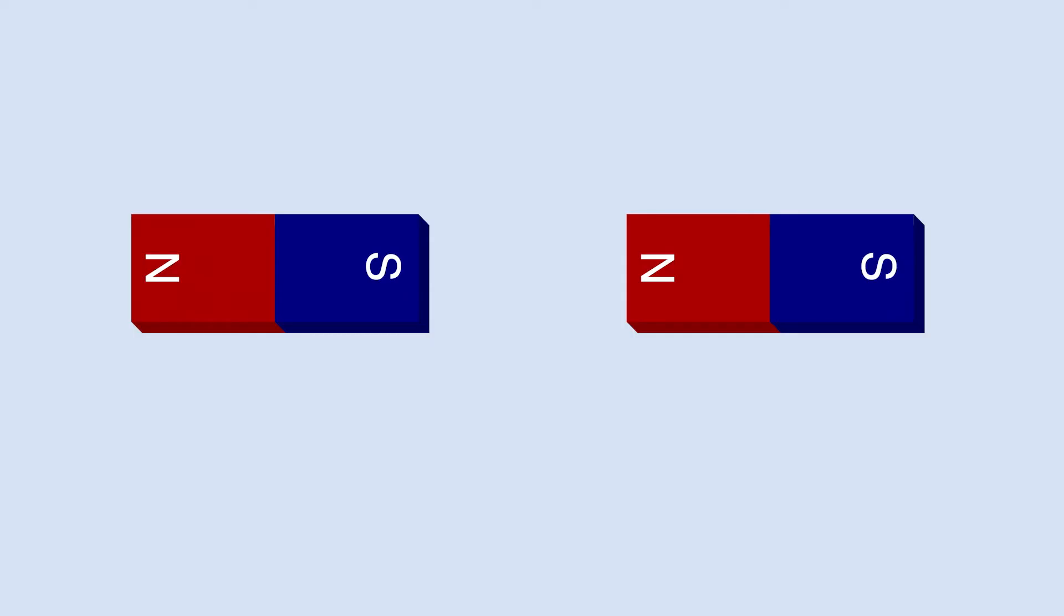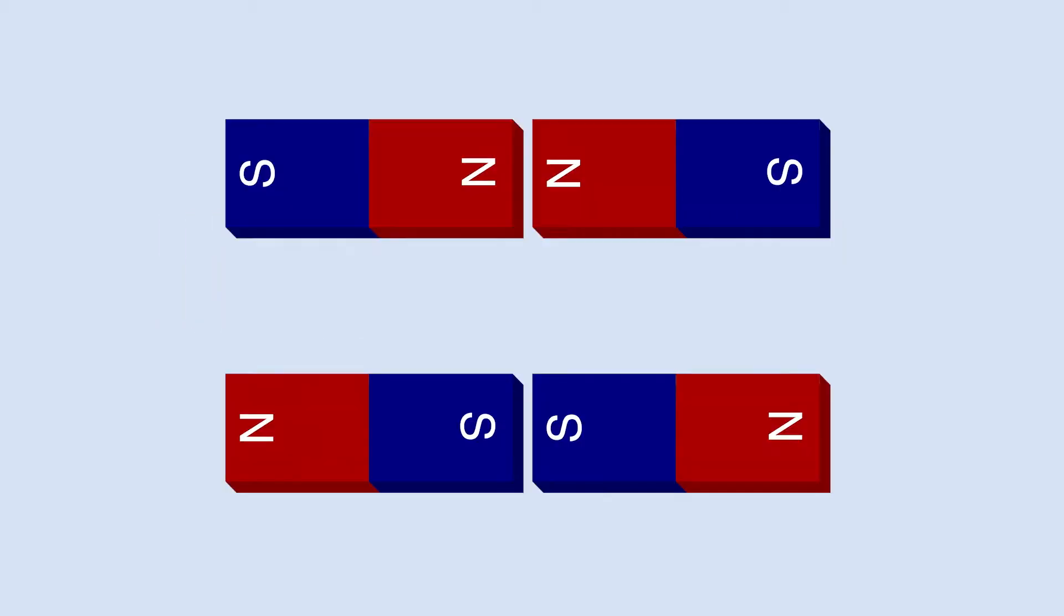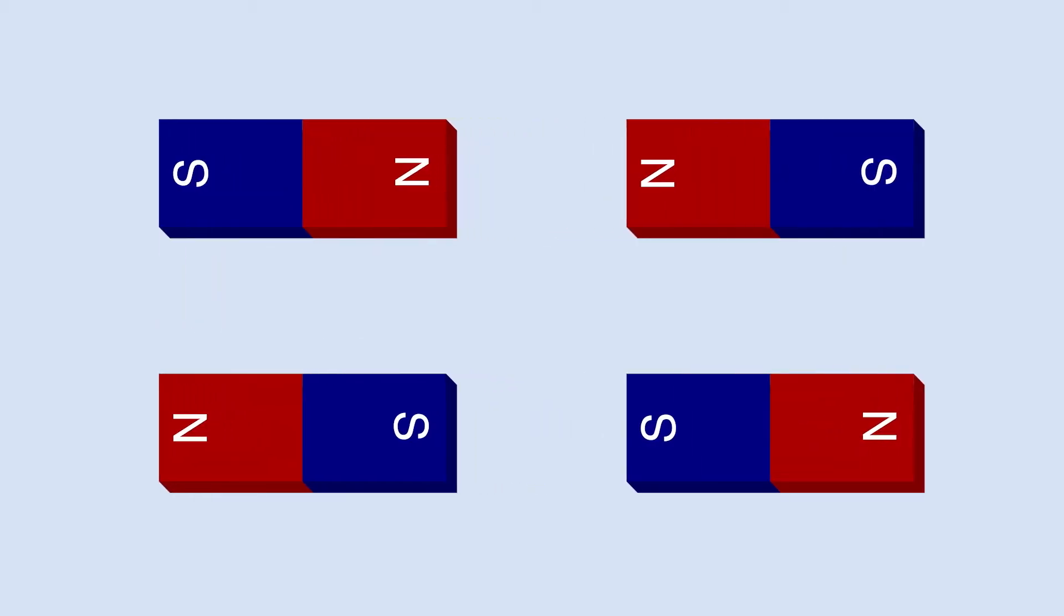Let's talk about magnets for a moment. If we hold two magnets end to end, the two ends will either jump together, attracting each other, or push apart, repelling each other.